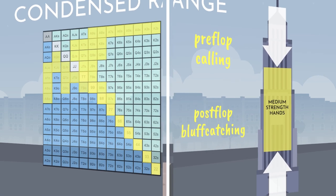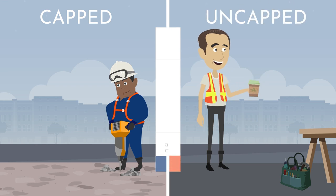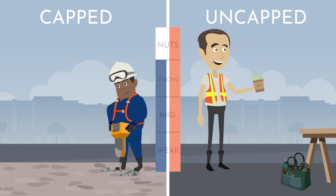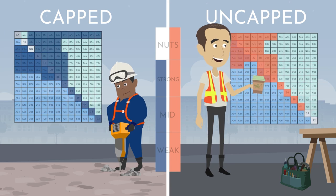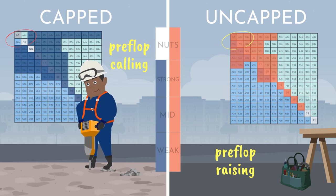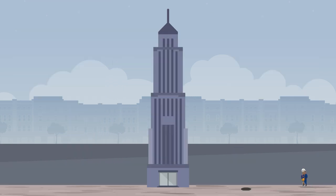The terms 'capped' and 'uncapped' refer to whether or not a range contains the nuts or near nuts at any given point. So a standard pre-flop raising range is almost always uncapped since it includes pocket aces and kings, whereas a standard pre-flop calling range is almost always capped. In post-flop scenarios, these terms can be used in more precise ways.